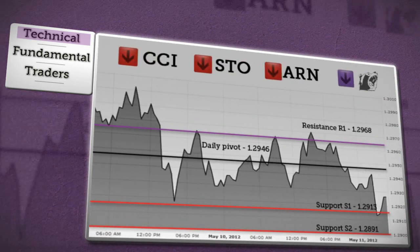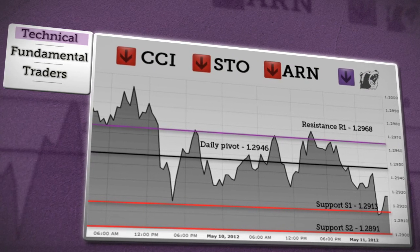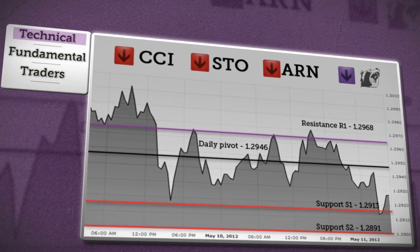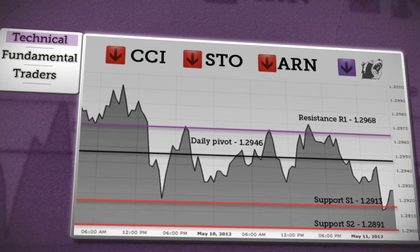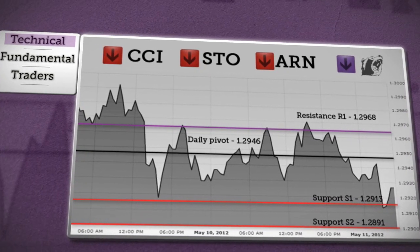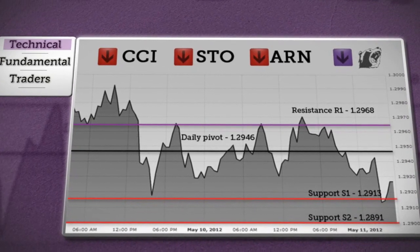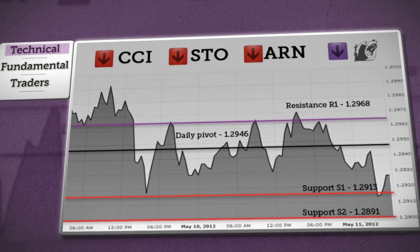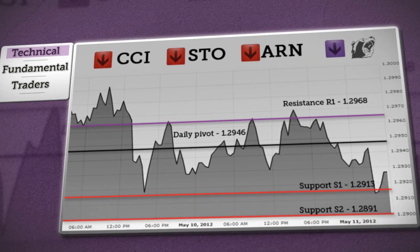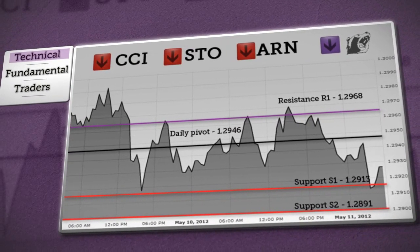Up first is the EURUSD. Prices are just testing support S1, and a break below this level will be indicating the next objective at S2. But if price rebounds from current support, it will focus on the daily pivot and probably rise towards resistance R1. Based on the conclusions for each indicator, we're expecting a bearish trend.